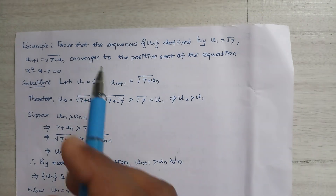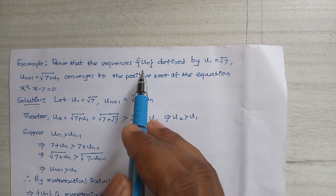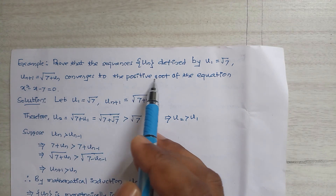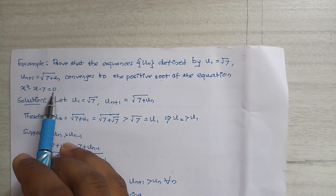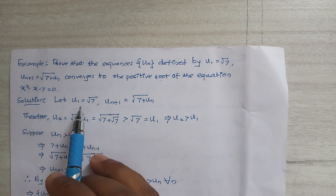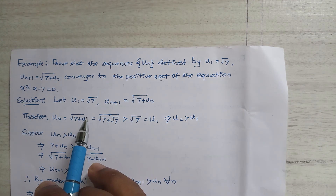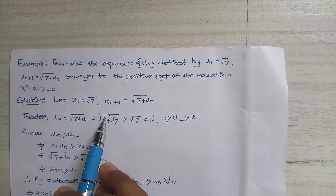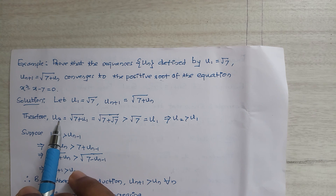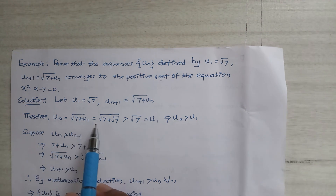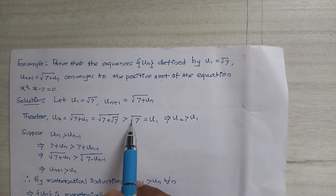Next example: prove that the sequence un defined by u1 = √7 and un+1 = √(7 + un) converges to the positive root of x² - x - 7 = 0. Solution: u1 = √7 is given and un+1 = √(7 + un). Putting n = 1: u2 = √(7 + u1) = √(7 + √7), which is strictly greater than √7 = u1.